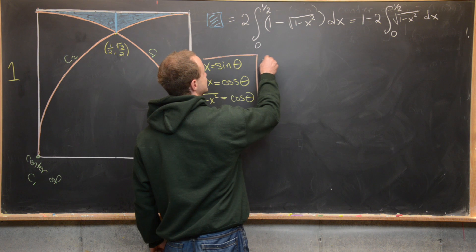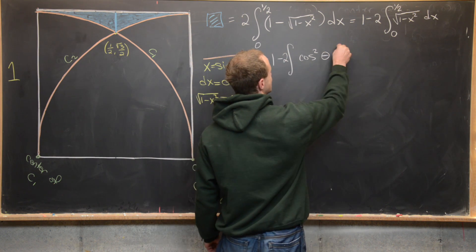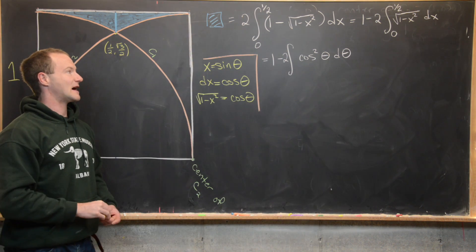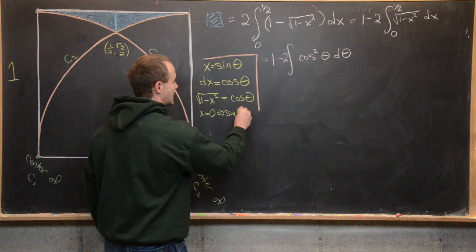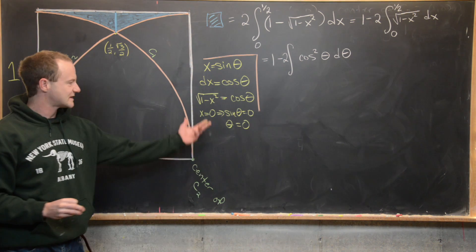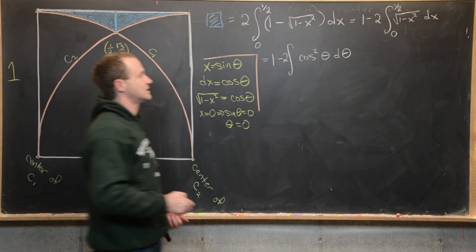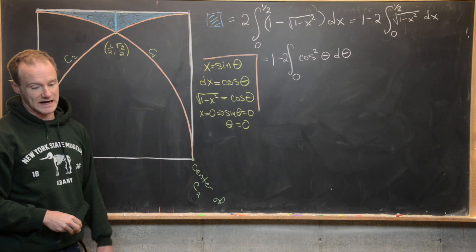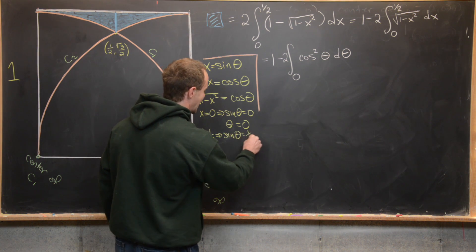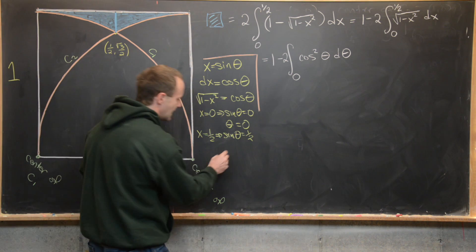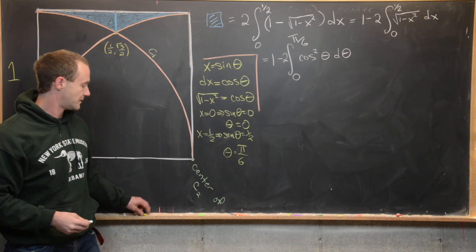The integral becomes 1 minus 2 times the integral of cos²θ dθ. We also need the new bounds: when x = 0, sin θ = 0 so θ = 0; when x = 1/2, sin θ = 1/2 so θ = π/6. So the upper bound is π/6.